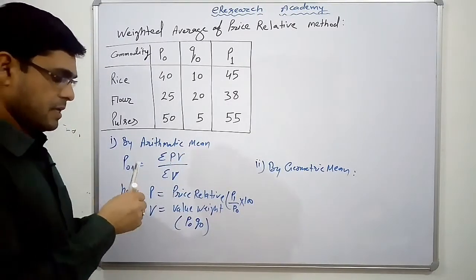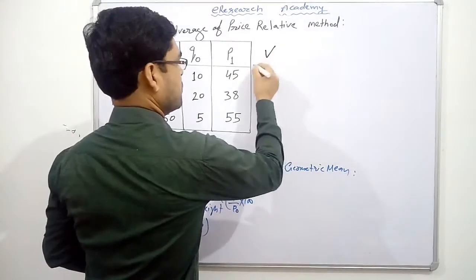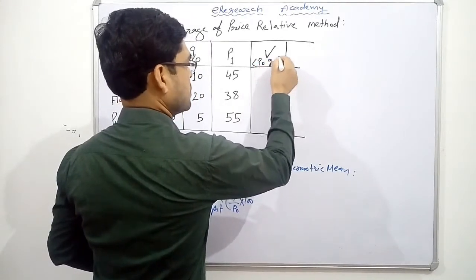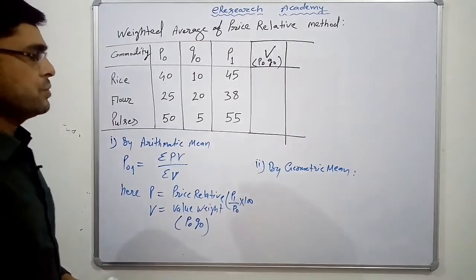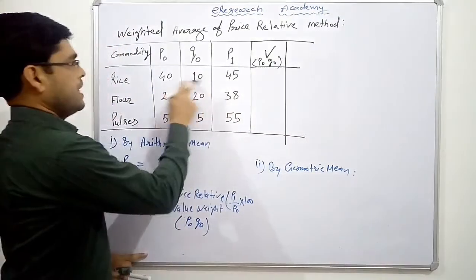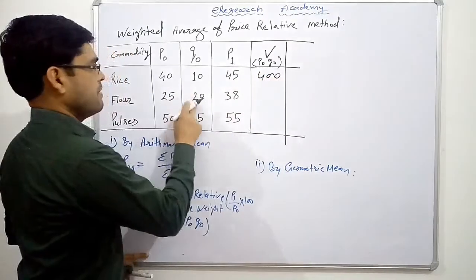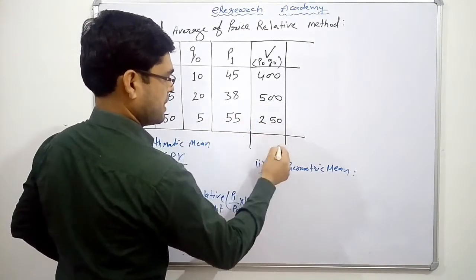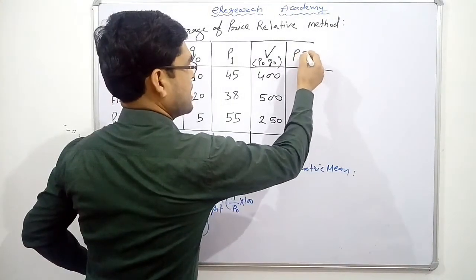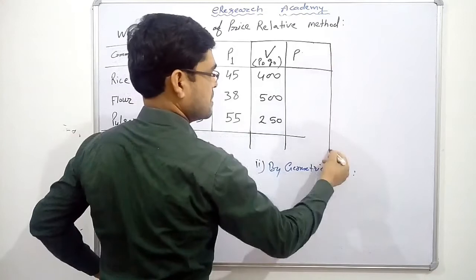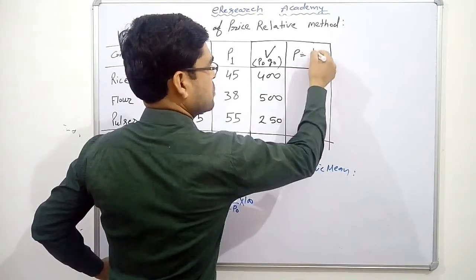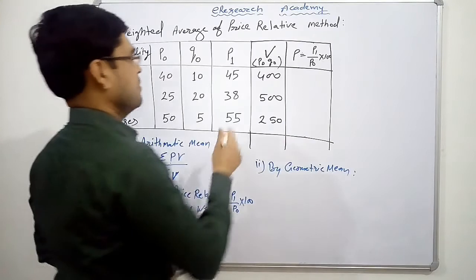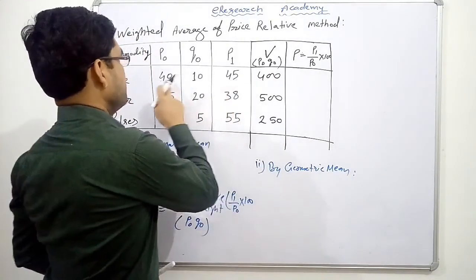We need two columns: PV and V. First, let's compute V, which is p0 × q0. So 10 × 40 = 400, 25 × 20 = 500, and 50 × 5 = 250. Next we need the price relative P = p1/p0 × 100. For the first commodity, p1 is 45 and p0 is 40.